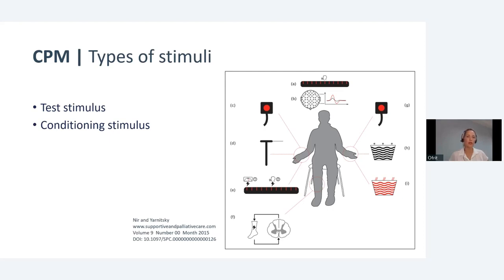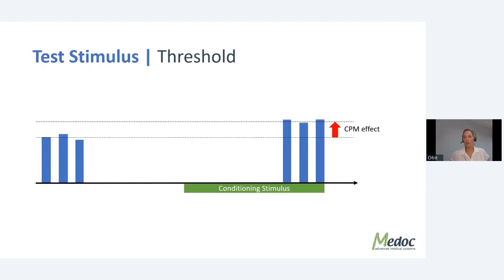The test stimulus is often done with either contact heat via thermode or nociceptive withdrawal reflex. In later years, computer-controlled pressure algometry has also joined. The conditioning stimulus can be a thermode, hot bath, cold press test, cold bath, or pressure algometry. To evaluate CPM, we mostly look at pain ratings, but you can also look at EEG, for instance.